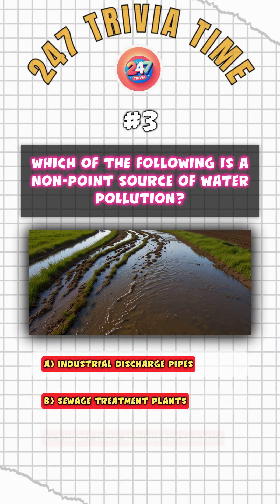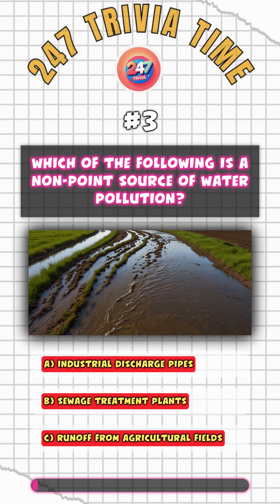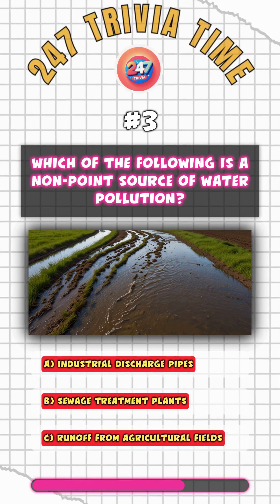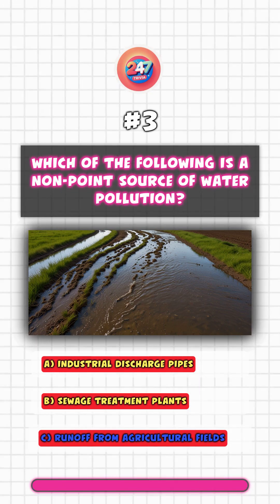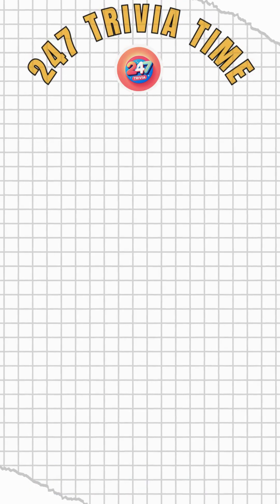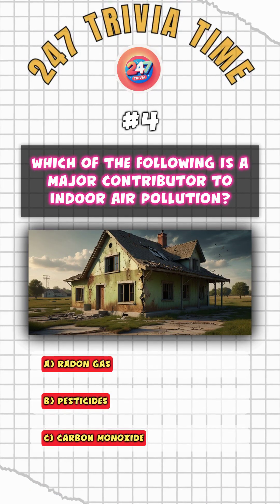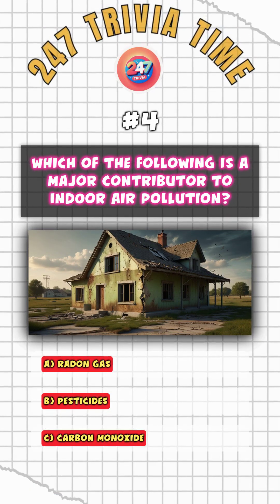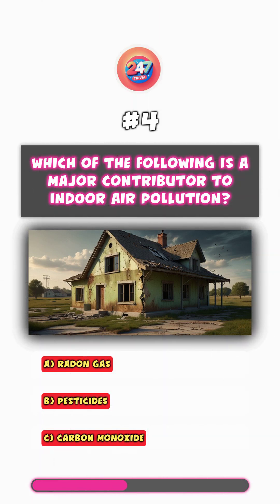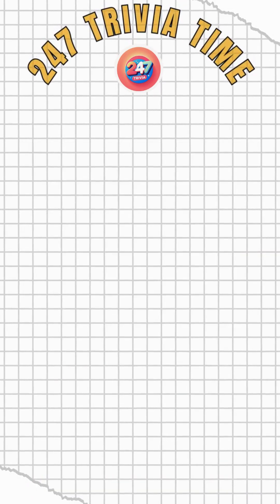Which of the following is a non-point source of water pollution? C. Runoff from agricultural fields. Which of the following is a major contributor to indoor air pollution? A. Radon gas.